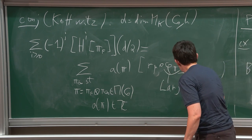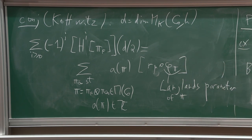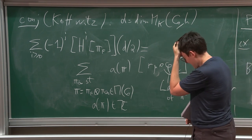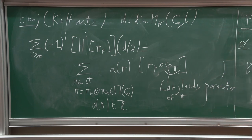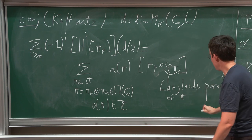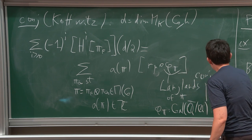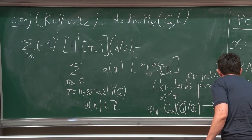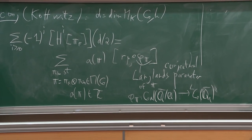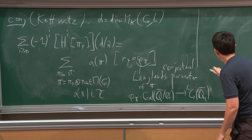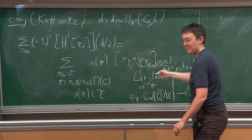The Langlands parameter φ_π: this is the conjectural Langlands parameter, taken as a map from the absolute Galois group of Q to the Langlands group — the Q_l-bar version — and here it's φ_π restricted to the absolute Galois group of E. The π that appear here are all algebraic representations, and for those we expect the parameter to factor through the motivic Galois group of Q, and then via the l-adic realization we get a parameter like this.